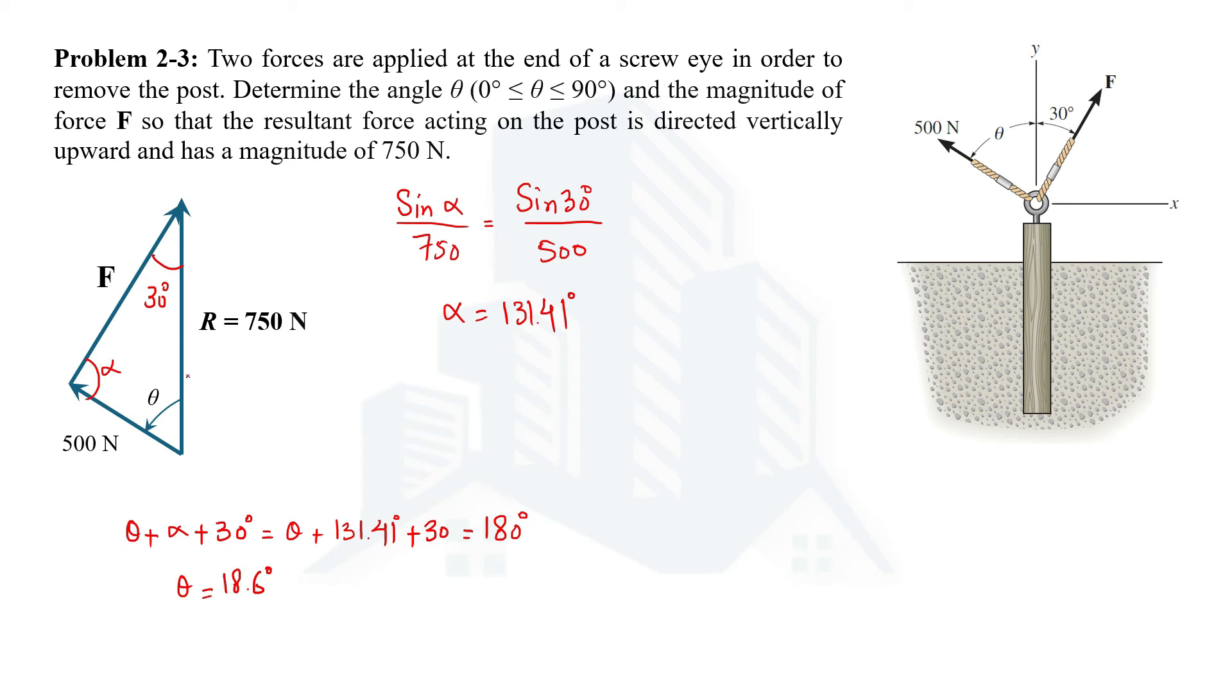Obviously this triangle is not made according to scale. Now again applying the sine law where we can determine the magnitude of the force F, since one required parameter is just calculated which is theta. So using sine theta, sine 18.6 degrees, because the opposite side is F, that's why we are using theta, so F is required here.